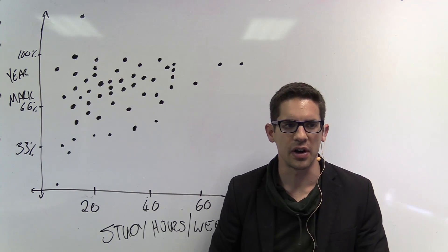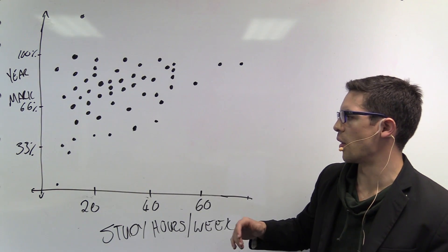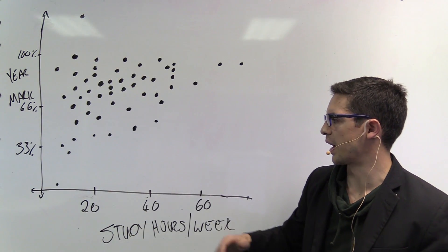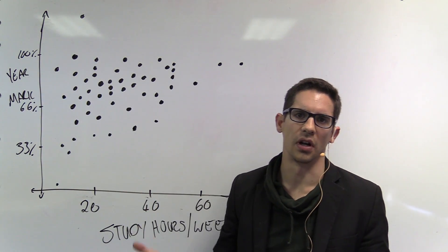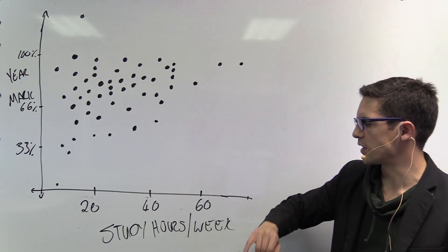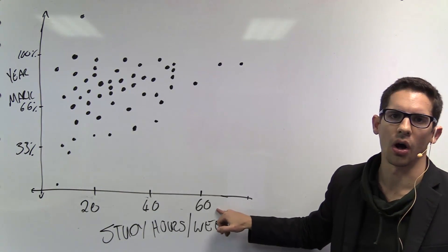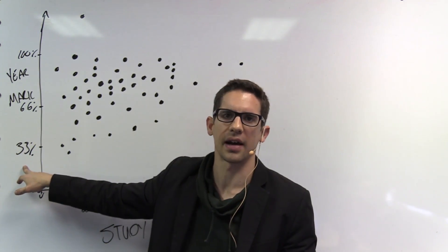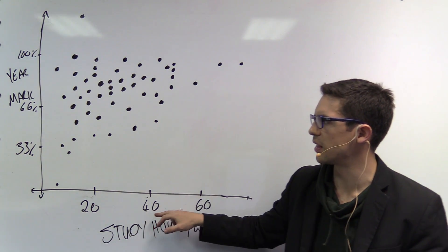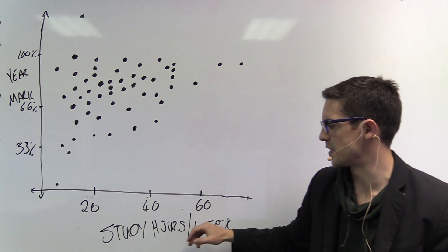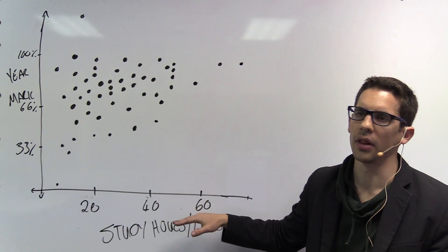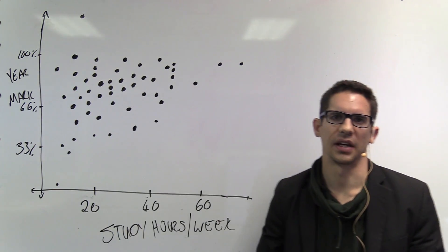The first question is: what is the explanatory variable and what is the response variable? We want to know which variable drives the other — which value will cause the other one to be lower or higher. When we have a scatter plot, we like to put the explanatory variable on the x-axis and the response variable on the y-axis, meaning y responds to x. If we study longer, we expect our mark to increase, so the number of hours we study is our explanatory variable — it explains the final year mark we get.